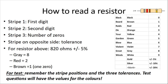The value on the right stripe is the tolerance — these three you have to remember. Gold is plus or minus 5%. Silver is plus or minus 10%. And if there's nothing, it's plus or minus 20%. So: first digit, second digit, the third stripe is number of zeros, the last one is the tolerance. The only things you really have to remember are what the positions mean and the three tolerance values.